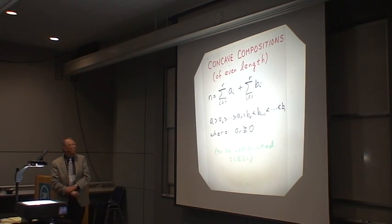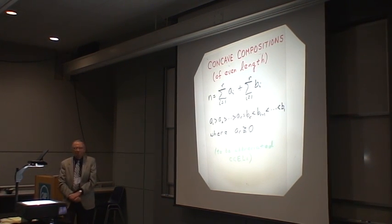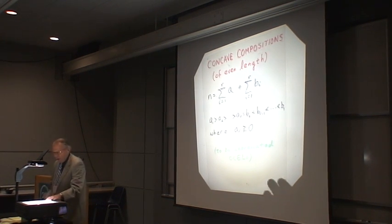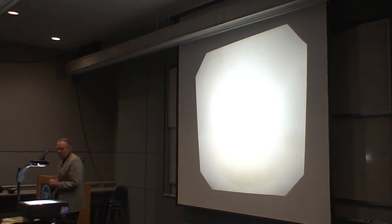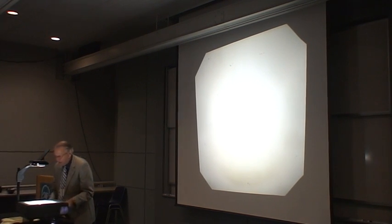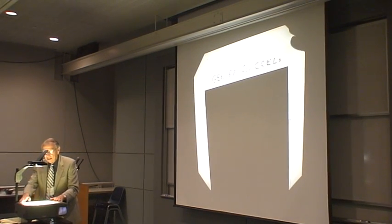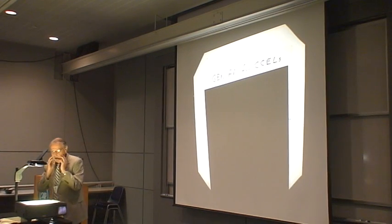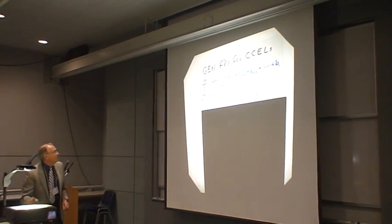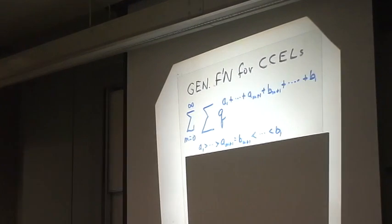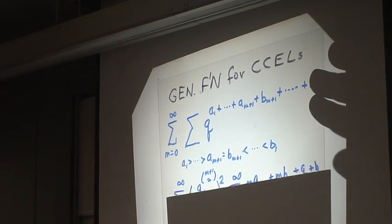Namely, in the example, there are both an equal number of A's and B's, and in this particular case, I want all the entries to be non-negative. So since I showed you this previous generating function, the argument here for what the generating function for these concave compositions of even length, CCELs—I seem to be given to horrid acronyms today. So here is the generating function for all such concave compositions, and just as I did before, two of these things, the A's up to A_M and the B's up to B_M.